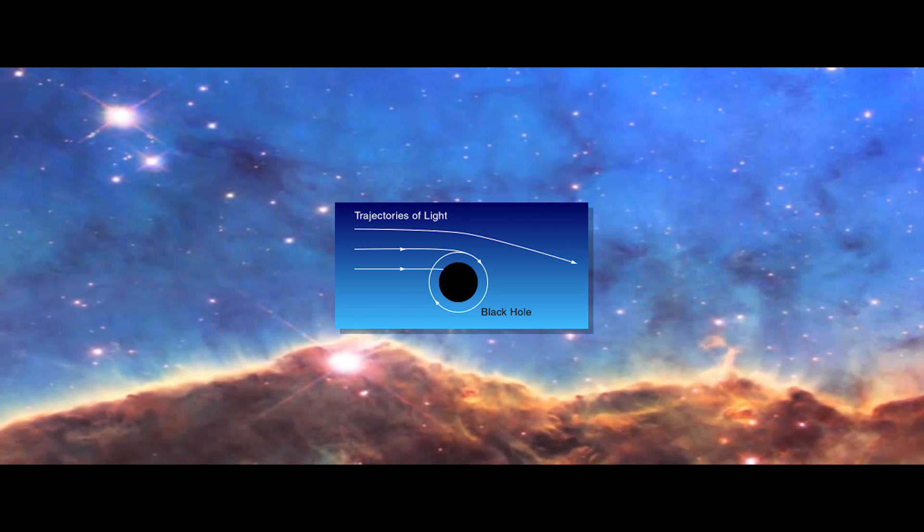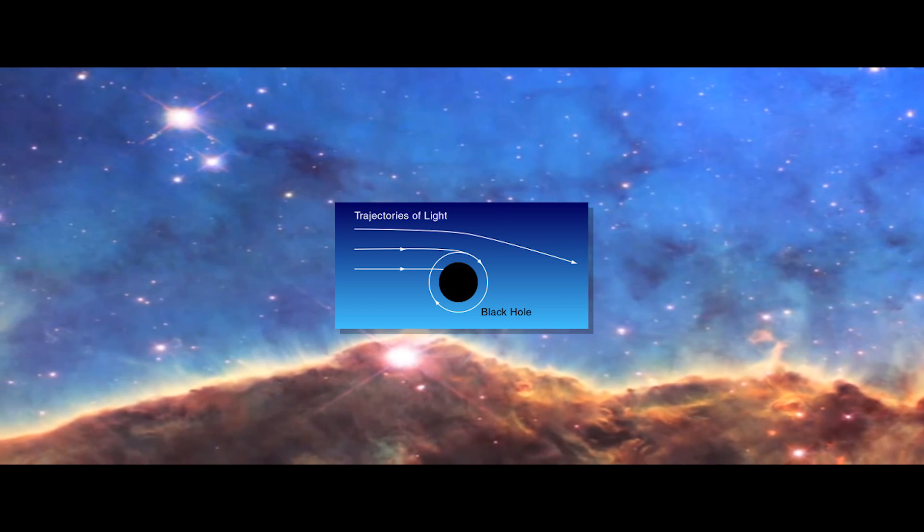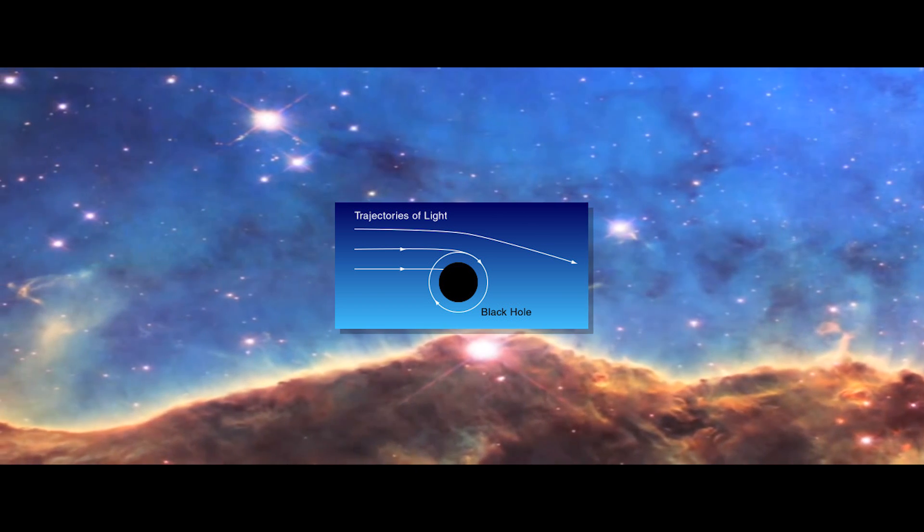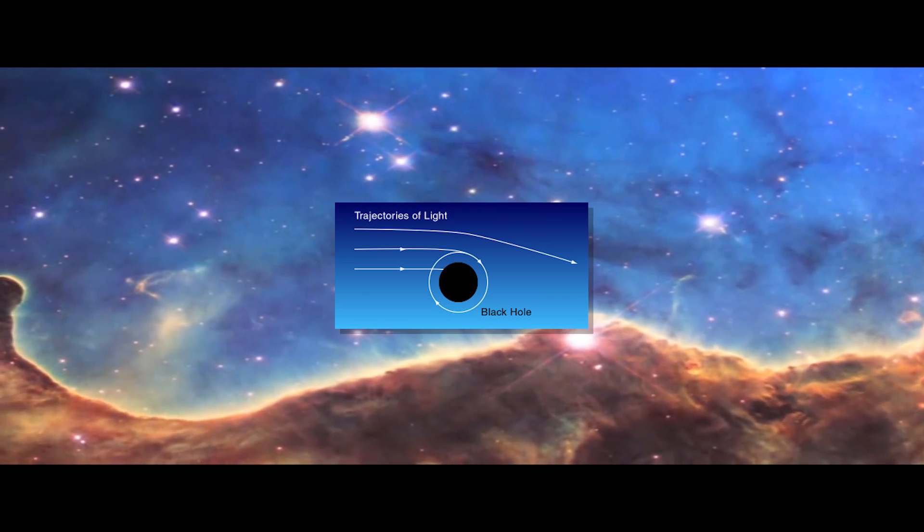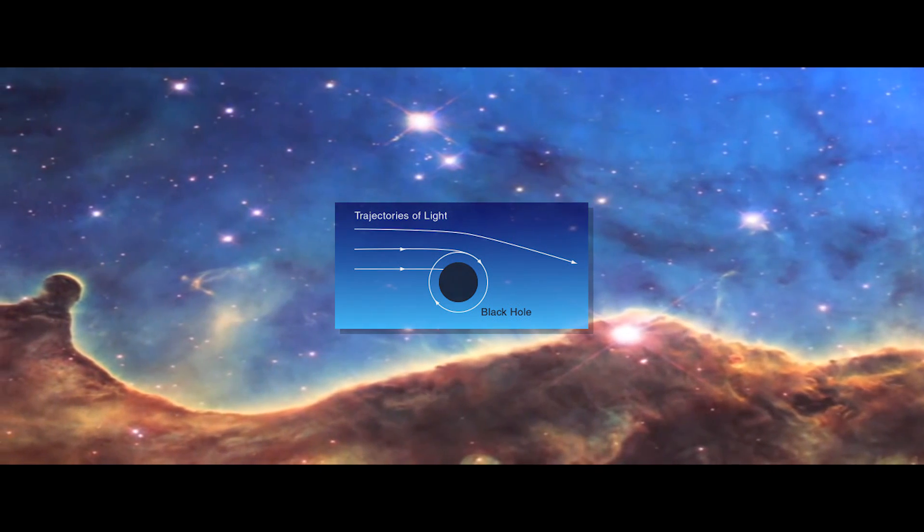Either something travels very close to the black hole and blocks the path of the photon, or the mass of the black hole either shrinks or increases, changing the gravitational pull and allowing for the photons to escape their perfect orbit.